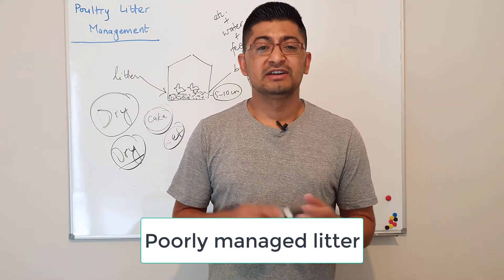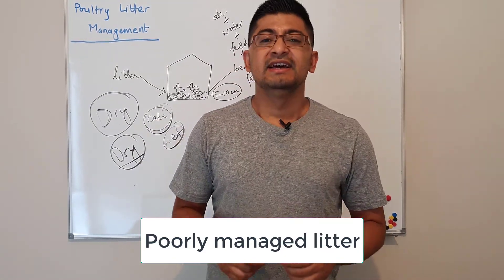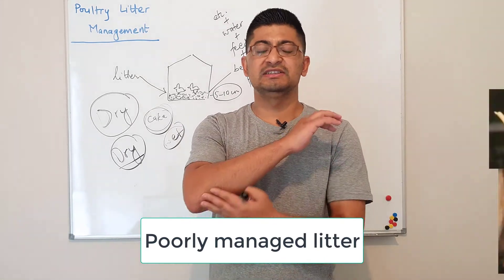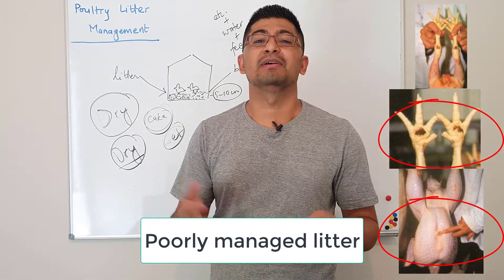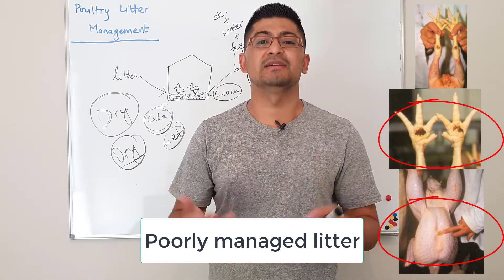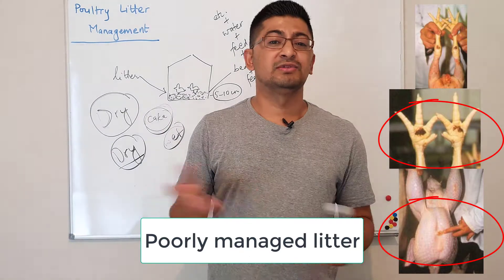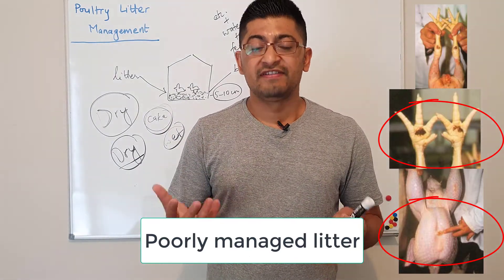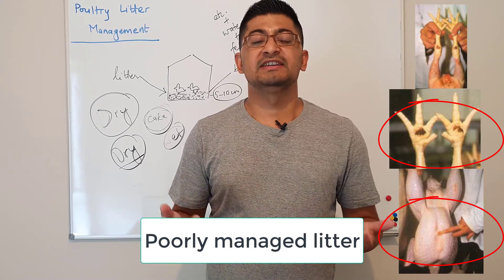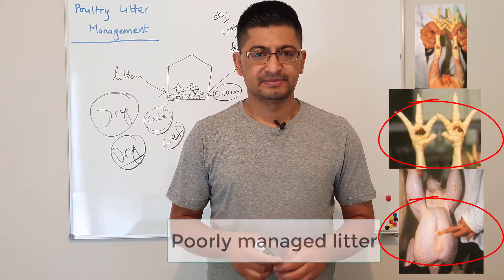When the litter is not properly managed, there is a lot of moisture in the litter, litter becomes caked, and when the skin, hock, and foot gets in contact with that litter there might be formation of blisters and dermatitis, which can have several negative consequences. Dermatitis provides a way for bacteria to enter inside the body of chickens, causing other infectious diseases. Also, caked litter produces a lot of ammonia, which affects growth performance, and when ammonia reaches 25 to 30 ppm it becomes irritating to the nose, skin, and eyes of chickens. So how can we manage litter?